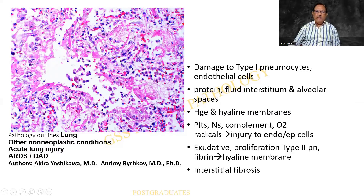This is different from the hyaline membrane disease of childhood. What happens is there is damage to two types of cells: type 1 pneumocytes and endothelial cells. There is production of protein fluid in the interstitium and in the alveolar spaces. Finally, there can be hemorrhage and the hyaline membrane — appearing as eosinophilia. Various substances and oxygen radicals can be produced, leading to damage to endothelial and epithelial cells. Exudation occurs, along with proliferation of type 2 pneumocytes as compensation, production of fibrin and hyaline membrane. The interstitium is wider; after all inflammatory forces, there will be fibrosis.